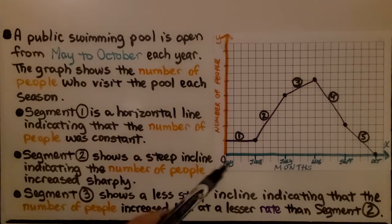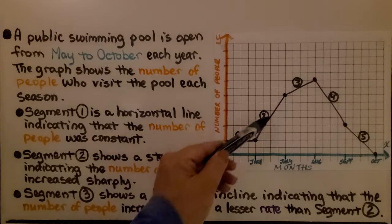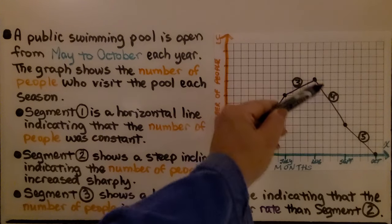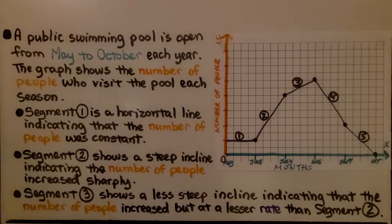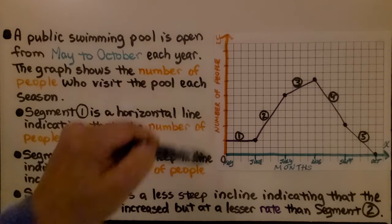Here we have a graph and we can see it goes steady and then it raises up, raises up, and then starts falling. A public swimming pool is open from May to October each year. The graph shows the number of people who visit the pool each season.